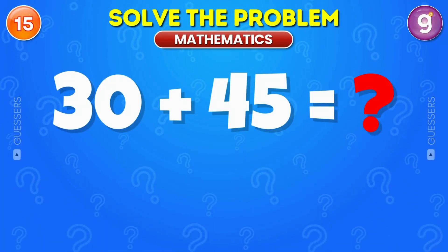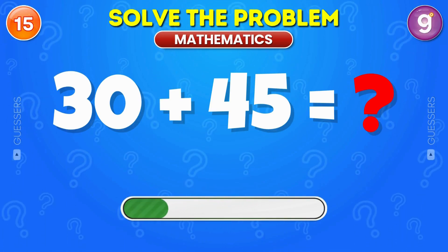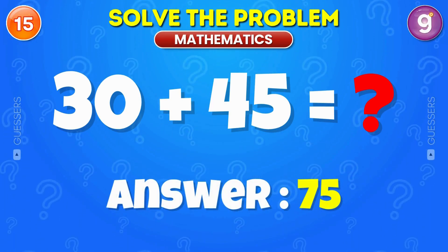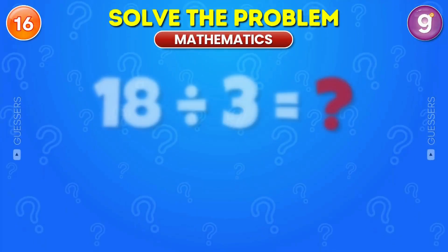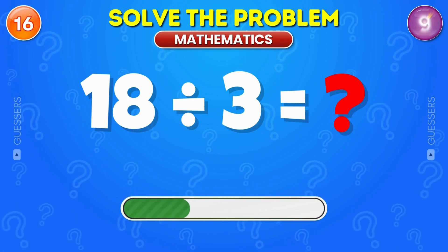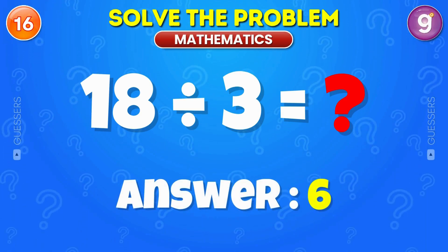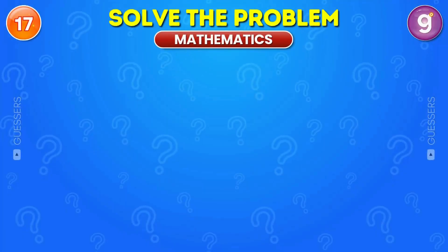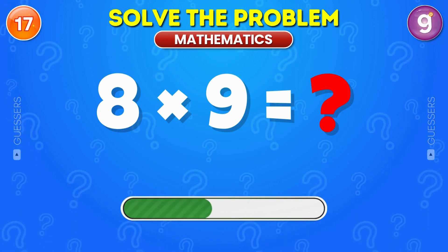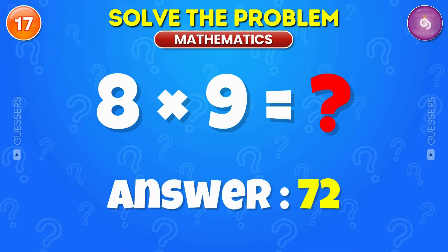What is 30 plus 45? It's 75. Divide 18 by 3. The answer is 6. Multiply 8 by 9. The answer is 72.